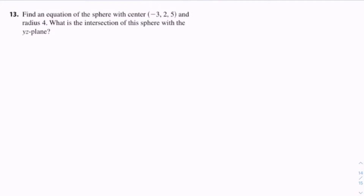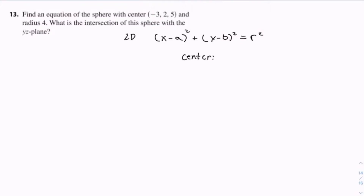Let's try to remember what the formula of the sphere is. So in two dimensions, it is x minus a squared plus y minus b squared equals r squared, where r is the radius and the center is (a, b).